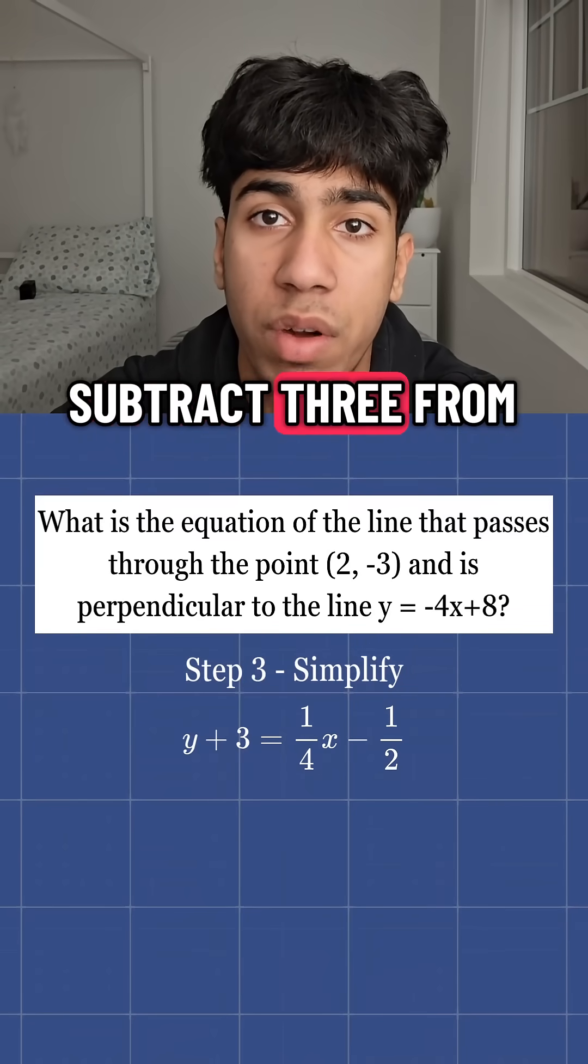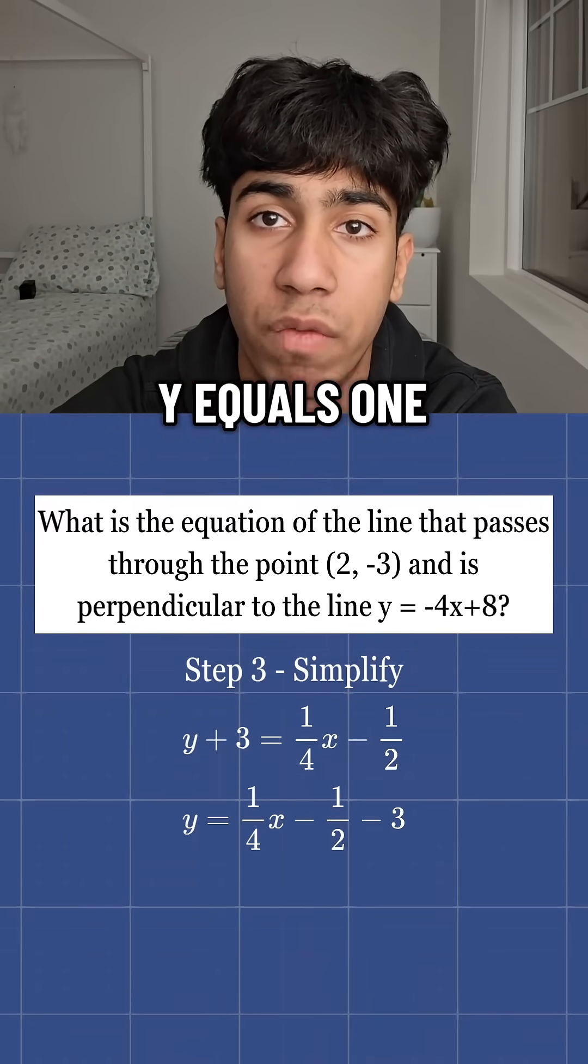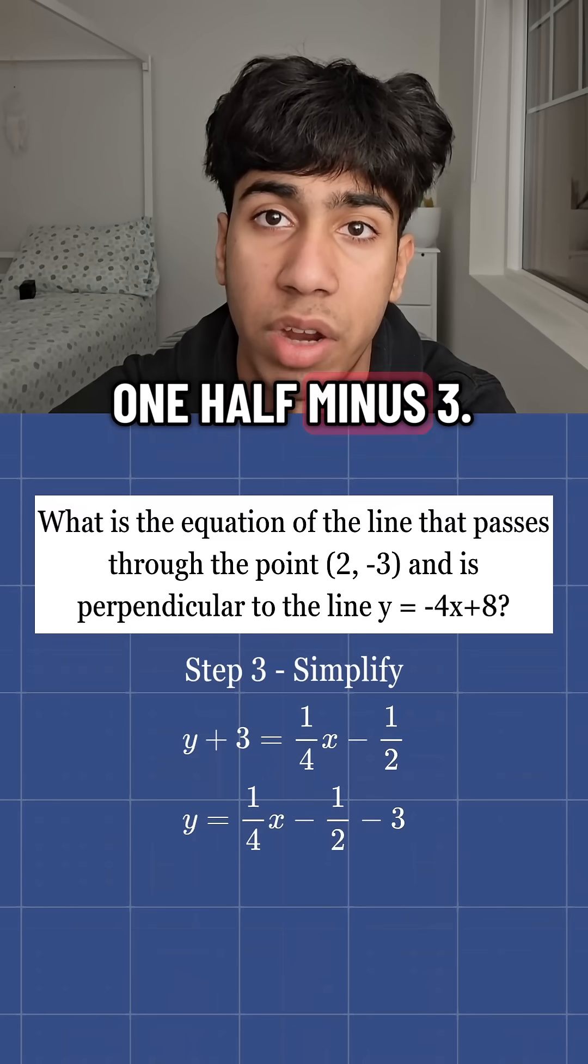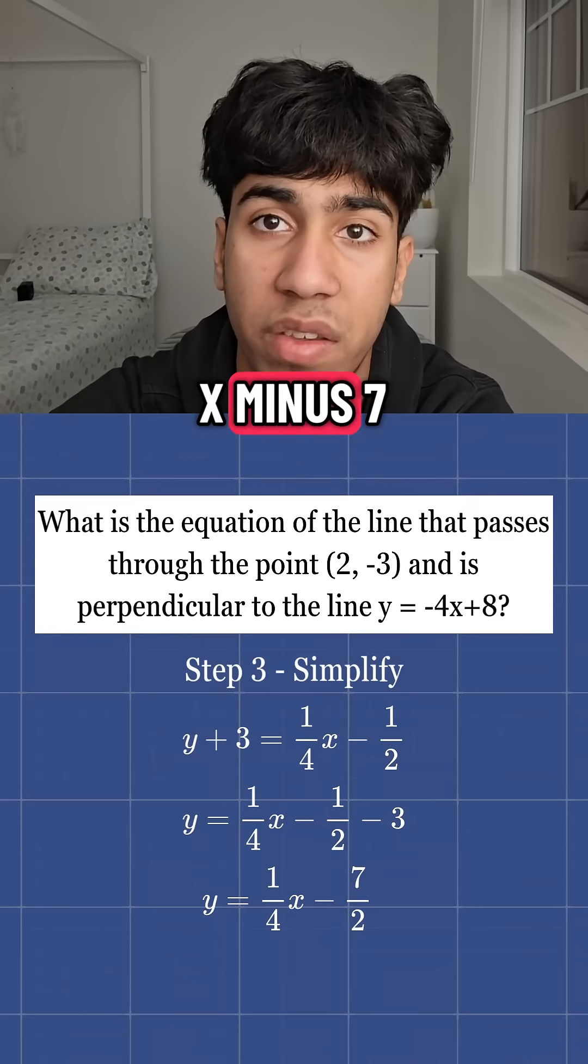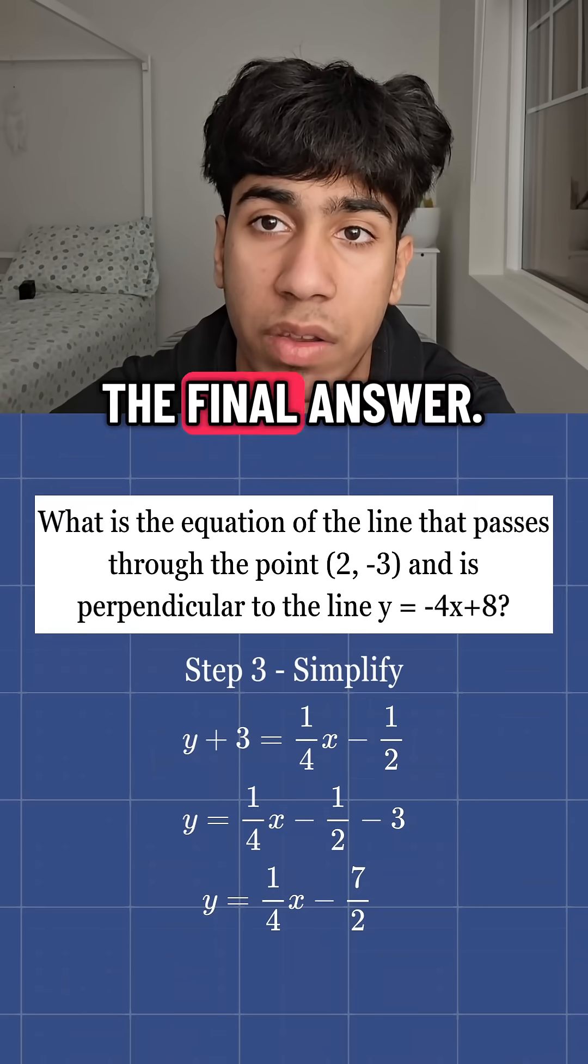Now, let's subtract 3 from both sides. y equals 1/4 x minus 1/2 minus 3. That fully simplifies down to y equals 1/4 x minus 7/2. And that's the final answer.